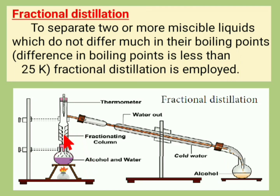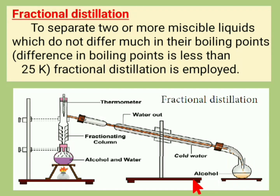Alcohol and water are taken in a distillation flask, closed with a one-hole rubber stopper fitted with a thermometer and condenser. The flask is heated. The vapors of alcohol pass through the inner sides of the condenser and are collected in the reservoir, while water remains in the distillation flask. Thus, water and alcohol are separated by fractional distillation.